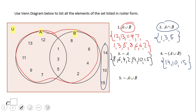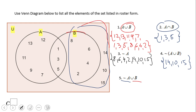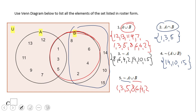Then here we have the complement of A union B. So let's do the same thing — we're going to look at the complement of A. The complement of A is represented by these elements, and B is represented by the circle itself. So we put these two together and we get: 1, 3, 5, 8, 6, 4, 2, 14, 10, 15. This is number five.